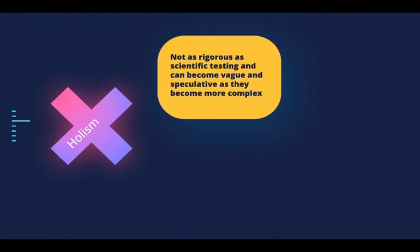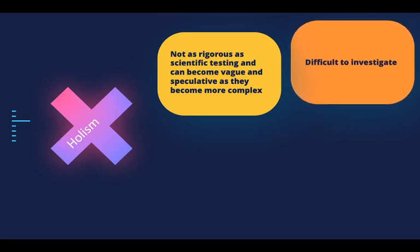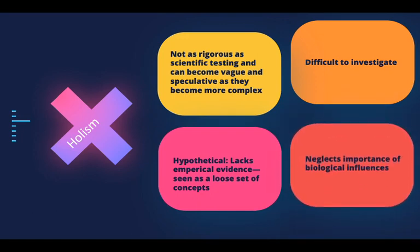There are downsides to holism though. It is not as rigorous — scientific testing can become vague and more speculative as things become more complex. It's difficult to investigate, because when you broaden things it becomes susceptible to other factors and influences, and so it is not as precise. It lacks empirical evidence and is seen as a loose set of concepts. It also neglects the importance of biological influences. You could take on the diathesis-stress model, but to a degree that is also reductionist, because it looks at the biological cause and then the stress — it's getting more broad, but not quite the whole picture.